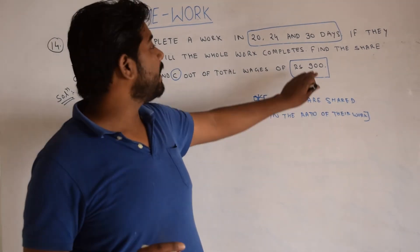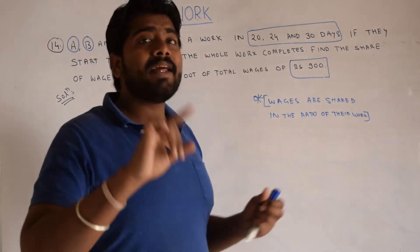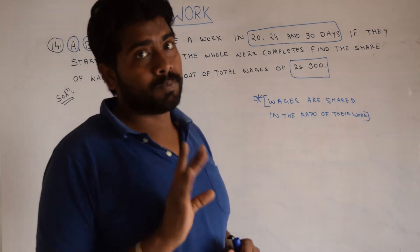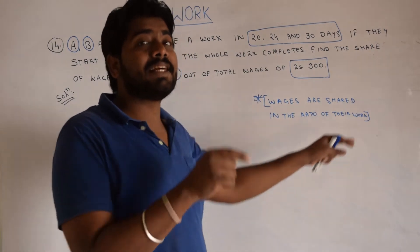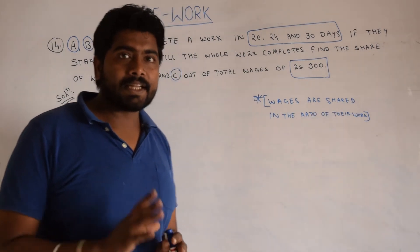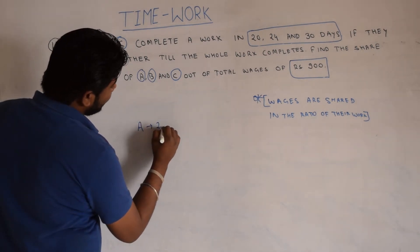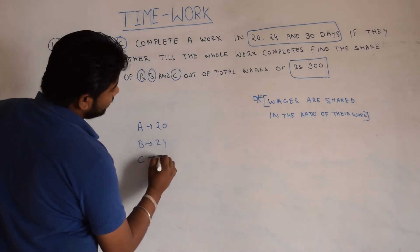So first of all, we will take the work ratio. How do we get the work ratio? One day, how much work does each person do? That will give us the ratio of their work. And the wages, the amount will be shared in that ratio only. One day work, how do we do this? We know very well. Write the information given in the question: A in 20 days, B in 24 days, C in 30 days.